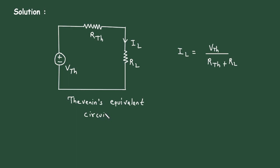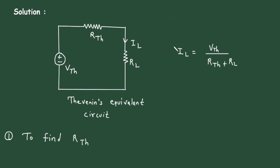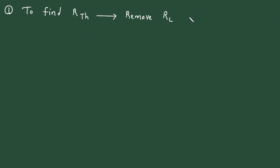Our first step will be to find RTH. The value of RL is 5 Ohm. Now to find RTH, what we do? Turn off — first remove RL and turn off all independent sources.